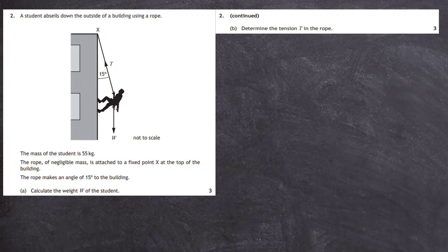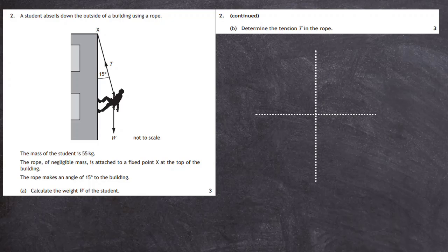Question 2b. First of all, we have to determine the tension T in the rope. To begin with, let's draw two axes, a vertical one and a horizontal one, centered on a little dot which is going to represent the student. And now what we do is we sketch in the forces acting on the student. Now we know the very first one, we just calculated it a minute ago. And that is the weight acting downwards, the 540 newtons acting downwards.